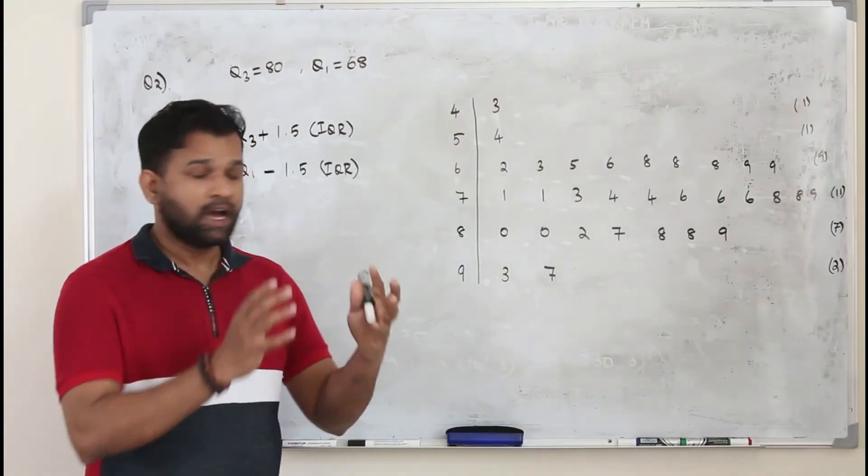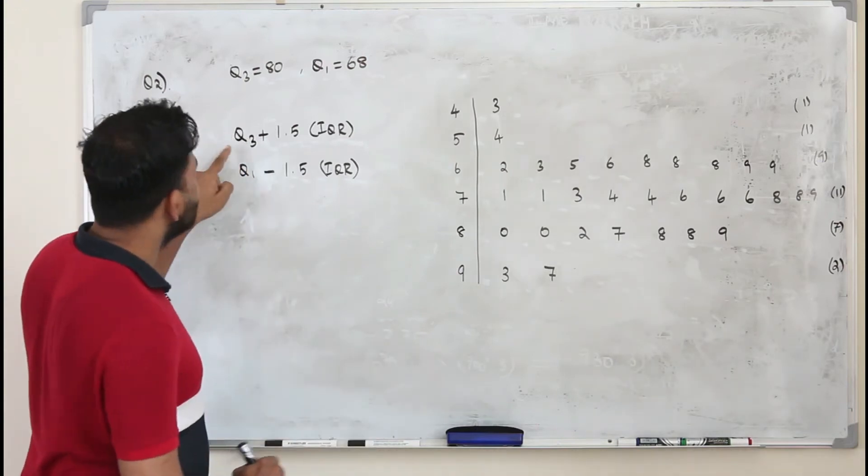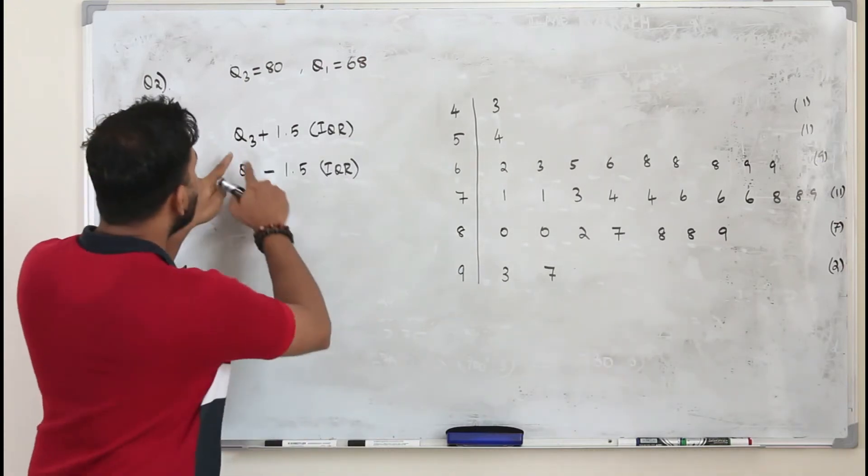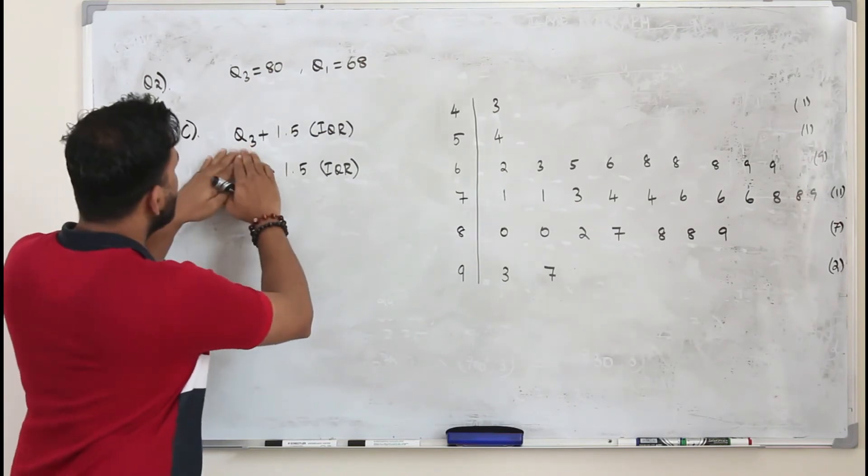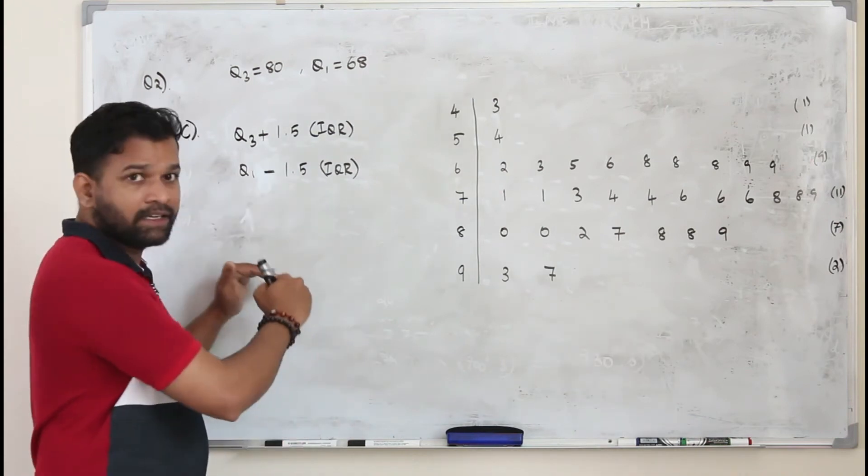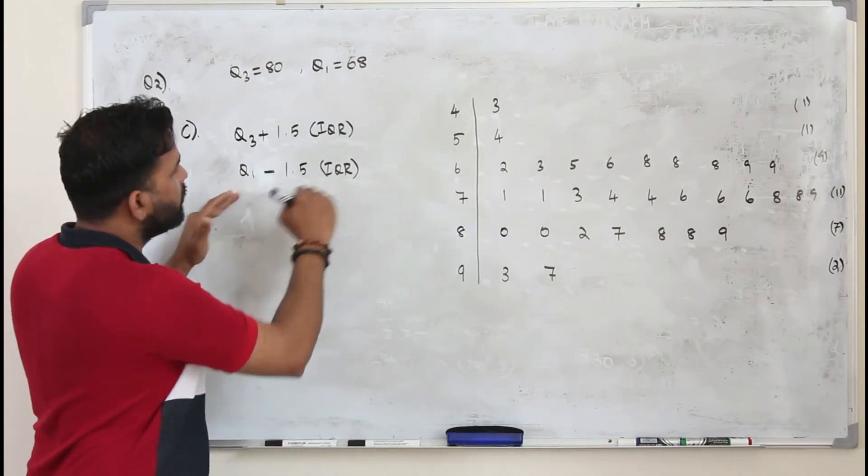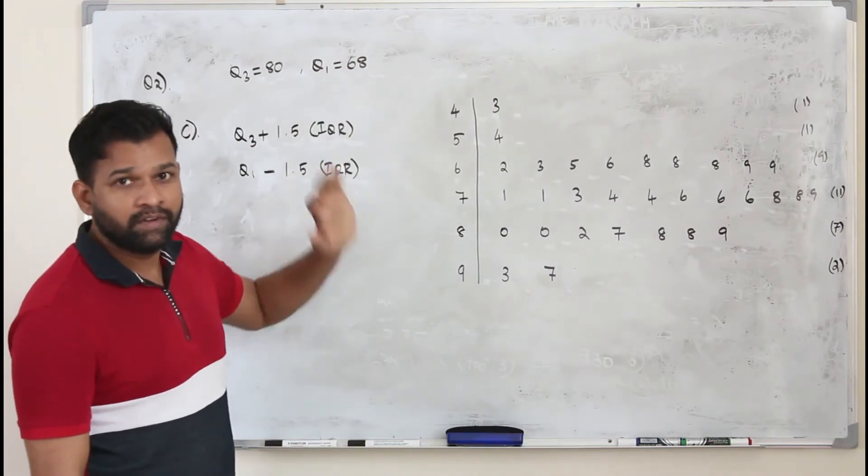Here we need to find the outlier from this set of data. So the outlier is defined as a value which is either more than Q3 plus 1.5 times IQR, or less than Q1 minus 1.5 times IQR. So we need to calculate these two, and then we find the outlier.